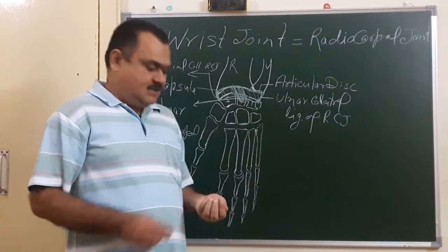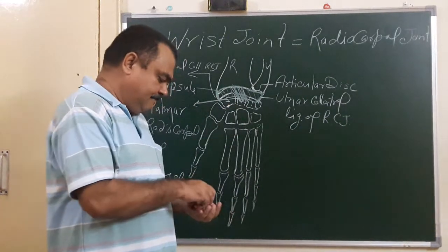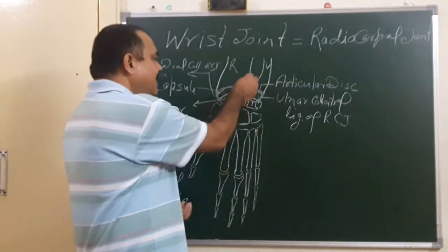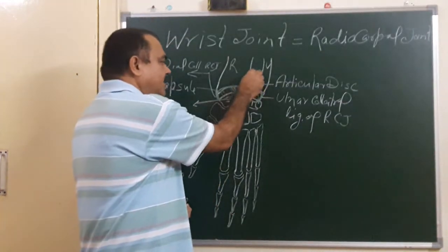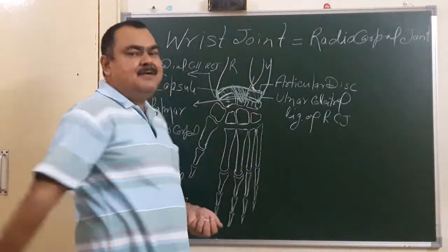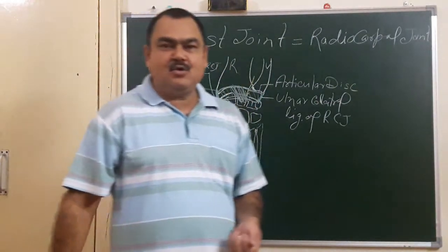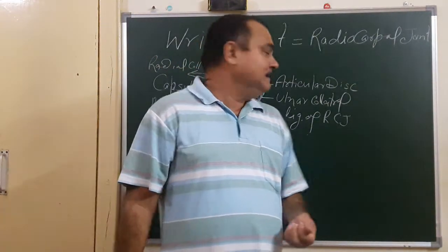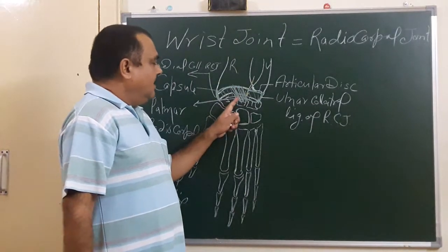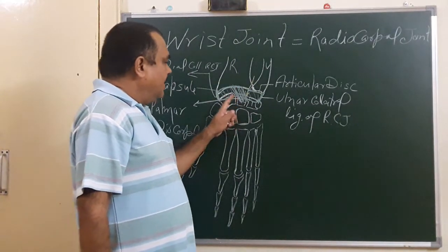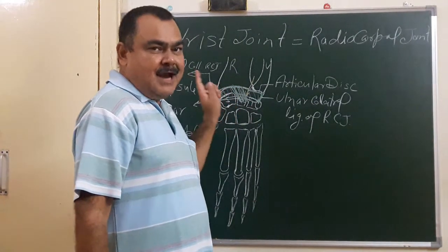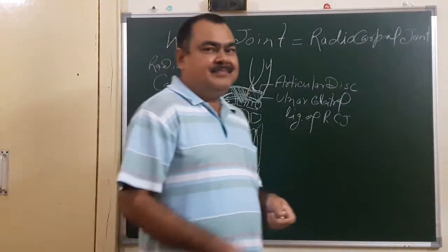Nerve supply of this joint is anteriorly by the anterior interosseous nerve and posteriorly by the posterior interosseous nerve.